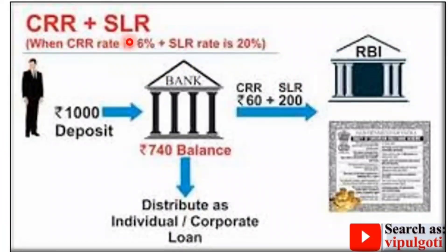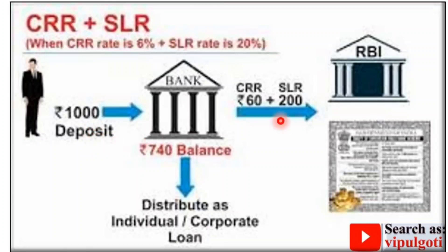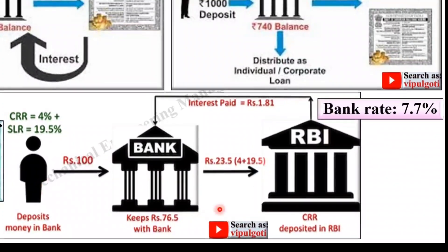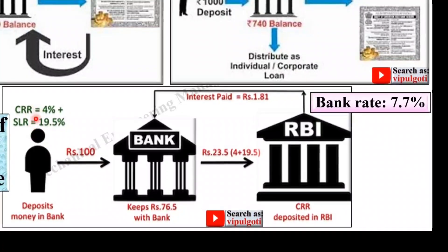Now let's understand CRR and SLR together. If the total deposit is 1,000 rupees, with CRR at 6% — that is 60 rupees — and SLR at 20% — that is 200 rupees — both amounts must be reserved with the RBI. So out of 1,000 rupees, the bank can use only 740 rupees to distribute in the form of loans.